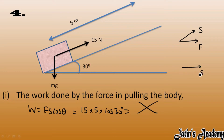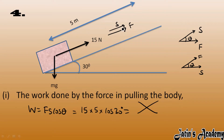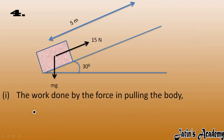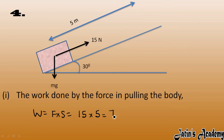F·S·cosθ applies only when there is an angle between force and displacement. In this case, the force is applied along the inclined plane and the displacement also occurs in the same direction — force and displacement direction is the same. So the angle is 0, and we simply use W = F × S. Force is 50 N, displacement is 5 m, so work done = 75 Joules.